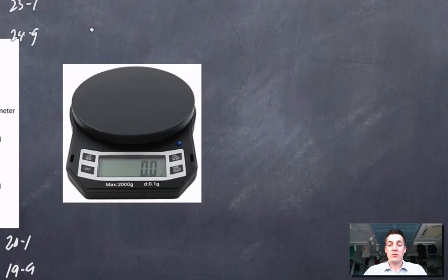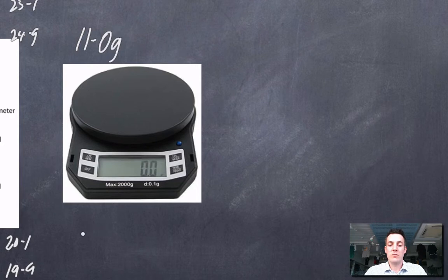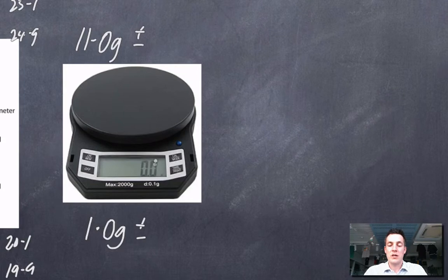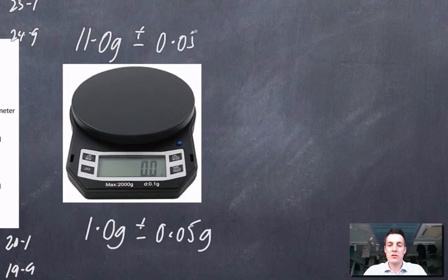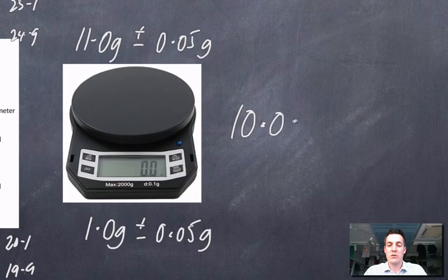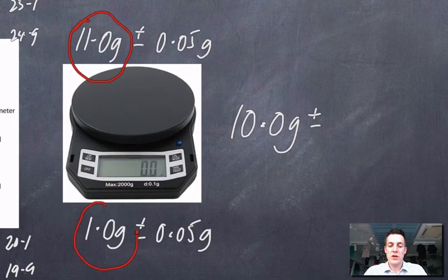Let's say I recorded the mass of an object in a weighing boat. The weighing boat with the object weighed 11.0 grams, and without anything in it, 1.0 grams. The absolute error is half the last decimal place — plus or minus 0.05 grams in both cases. The mass of the object is 10.0 grams, and since I subtracted one reading from the other, I add the absolute errors together, giving an overall error of plus or minus 0.1 gram.